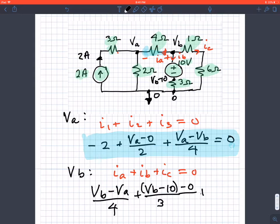Finally, for IC, we've got these two resistors in series, so the total resistance is seven ohms. You can mentally combine that. This would be VB minus zero divided by seven.